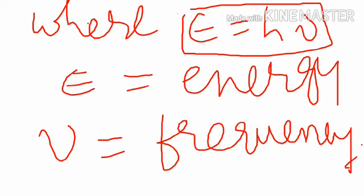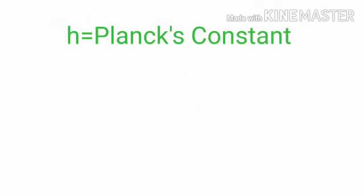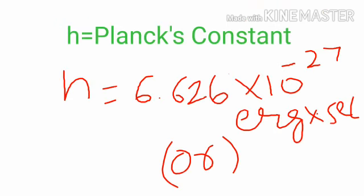E is called energy, nu is frequency and H is called as Planck's constant. H is equal to 6.626 into 10 power of minus 27 erg into second.